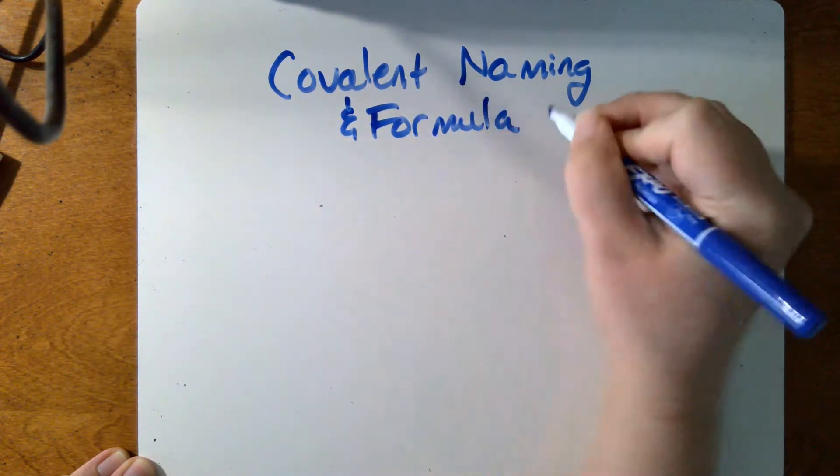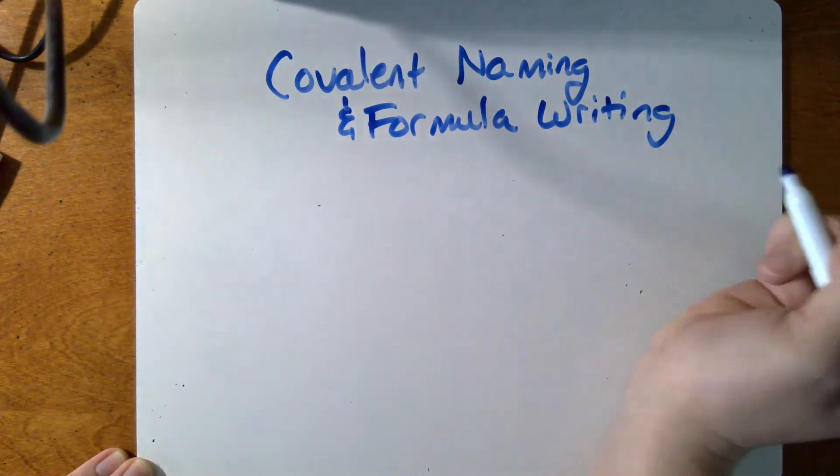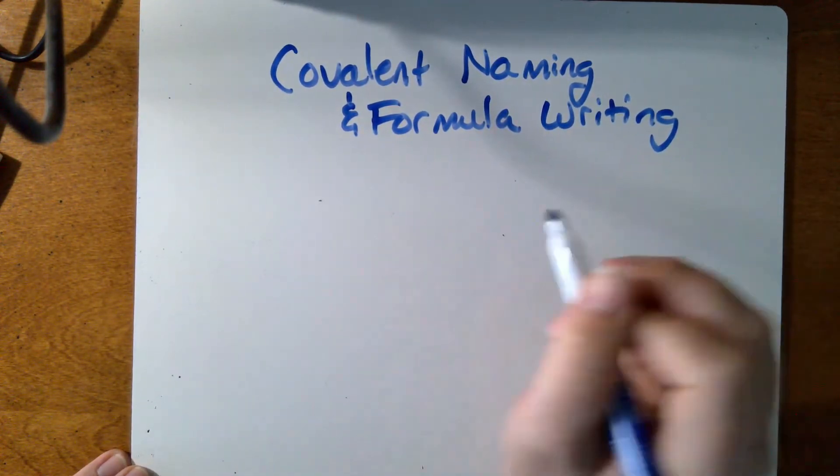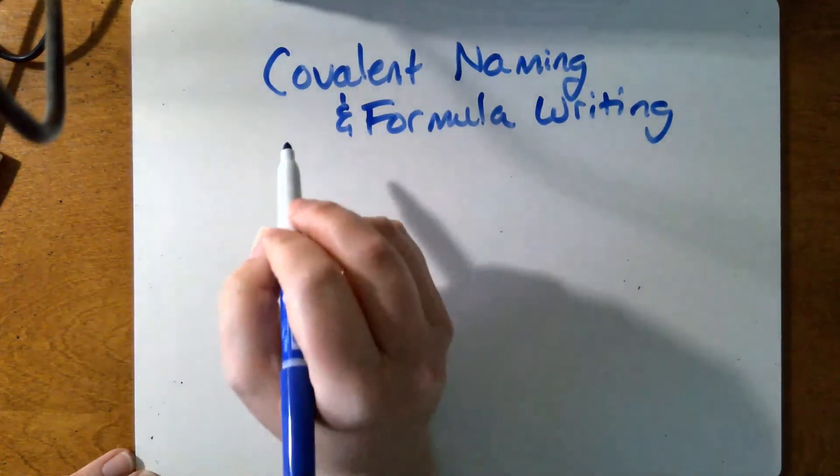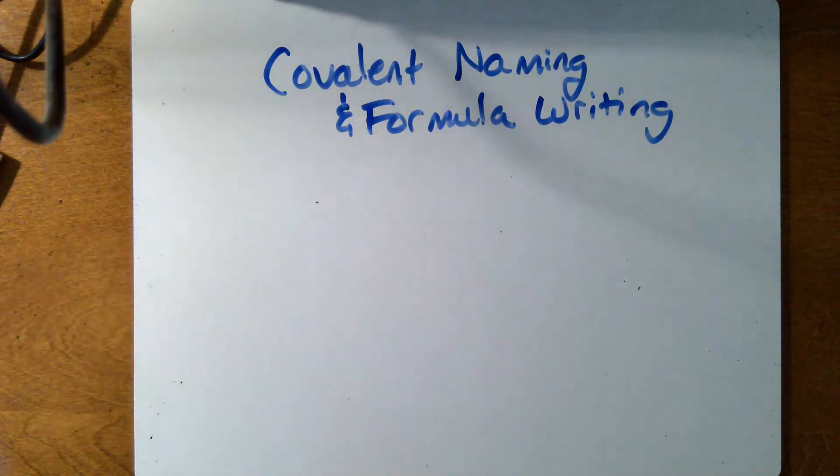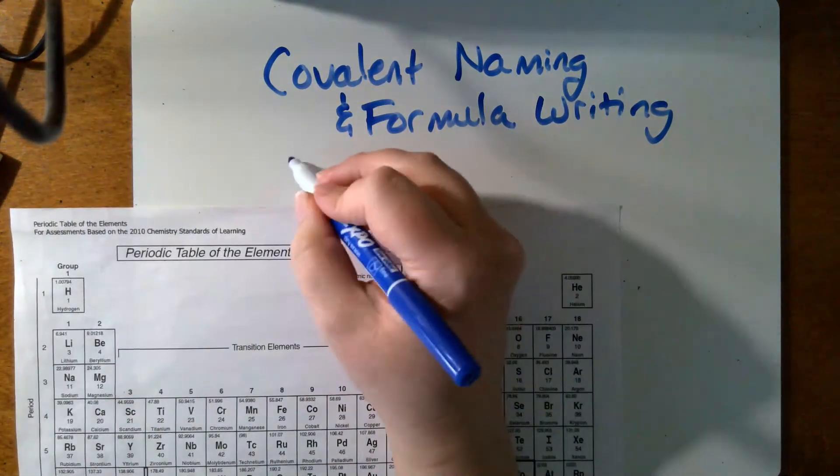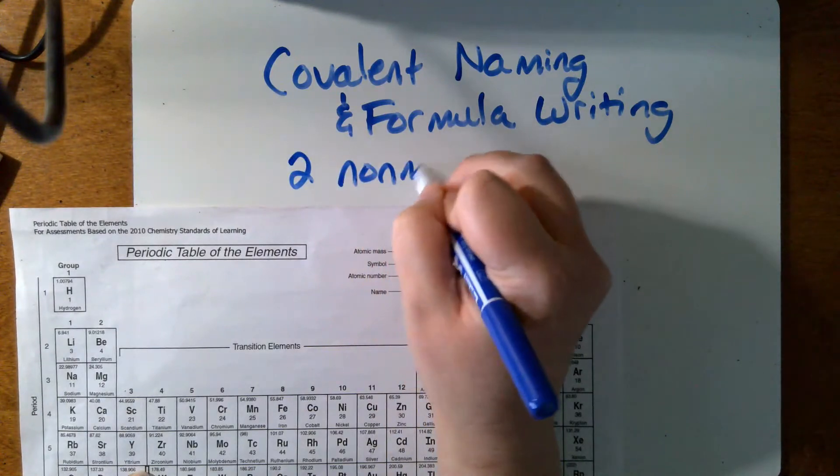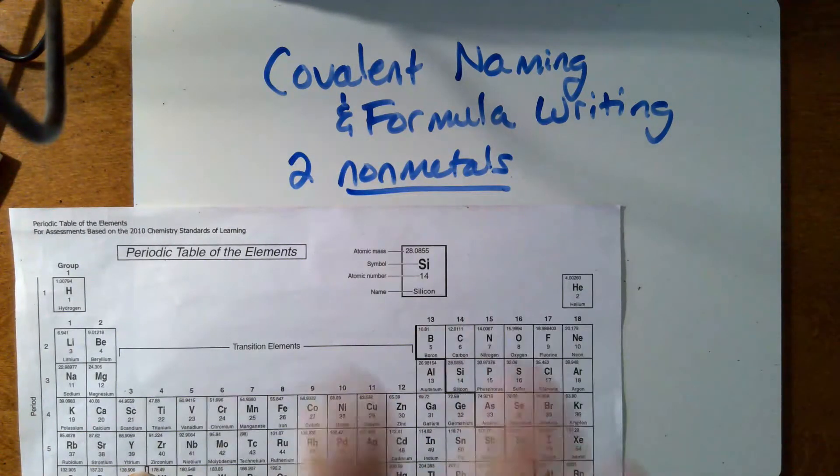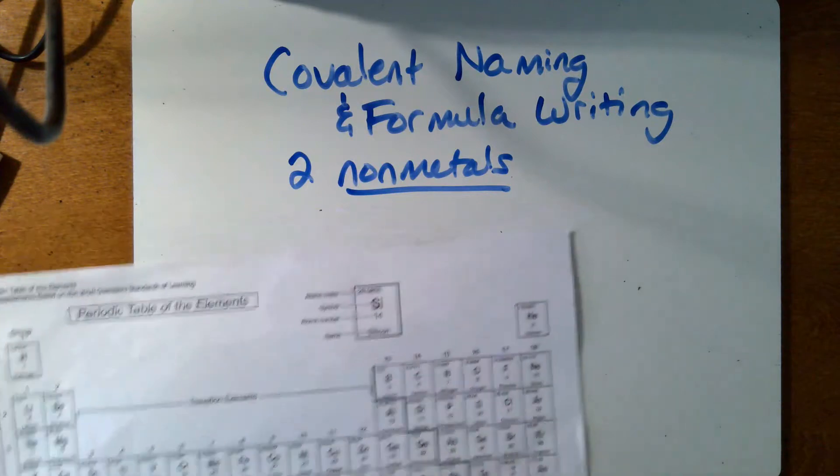The bad news is, once you learn this, it's really tempting to apply it to ionic situations too. So you have to be very careful that we're only going to use this when we have a covalent compound. Remember, we have a covalent compound when we have two non-metals bonded together. So if there's a metal anywhere in the compound, you cannot use these rules.